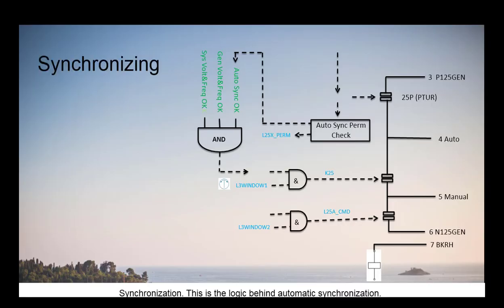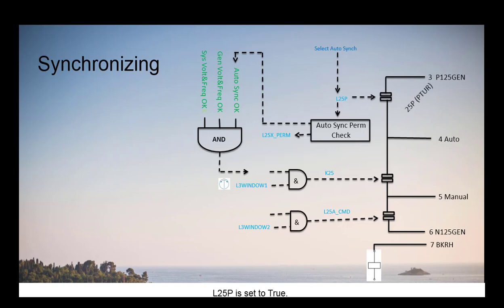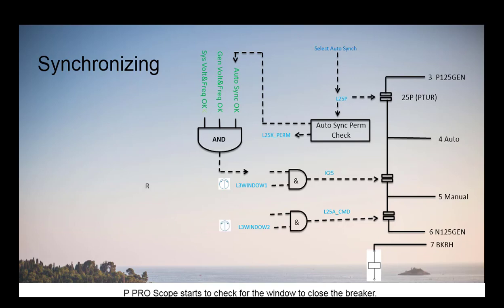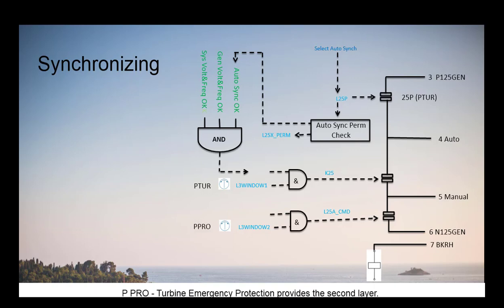This is the logic behind automatic synchronization. The operator selects auto synchronization, and L25P is set to true. P-TUR closes the first of three hardware contacts to close the breaker. Turbine Primary Protection provides the first layer of checks for synchronization. P-PRO, Turbine Emergency Protection, provides the second layer. The logic in the Toolbox ST program checks if the generator control panel has been set for auto synchronization.